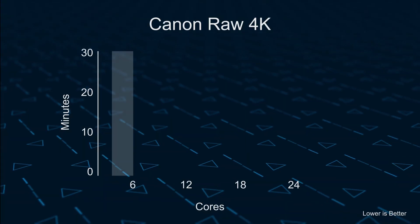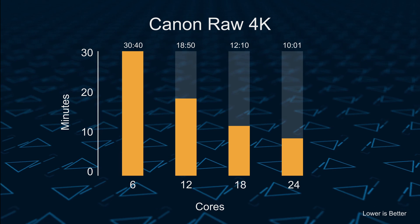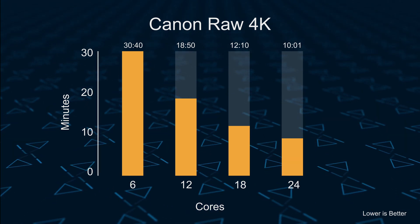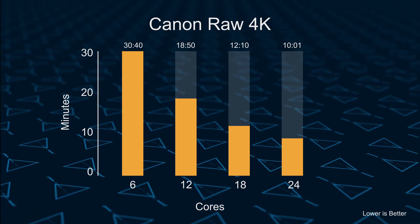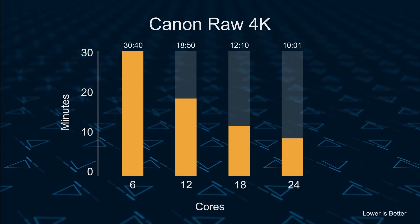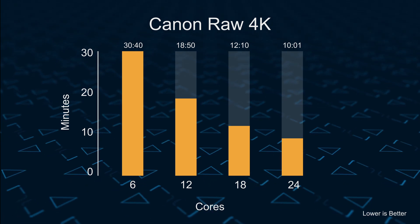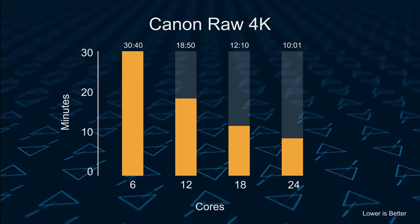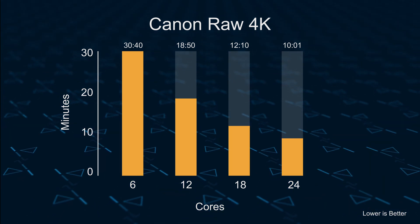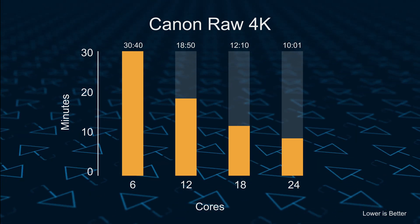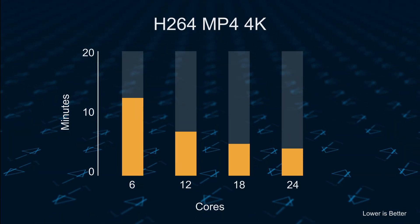First up we've got the Canon Cinema Raw Light in 4K. Here are the 6-core, 12-core, 18-core, and 24-core export configurations for a roughly five-minute 4K 60fps project of sped-up footage. The 6-core configuration took almost half an hour to complete the export transcode, while 12-core dropped to about 18 minutes 50 seconds and 18-core to 12 minutes 10 seconds. Going to 24 cores dropped another two minutes in export time.